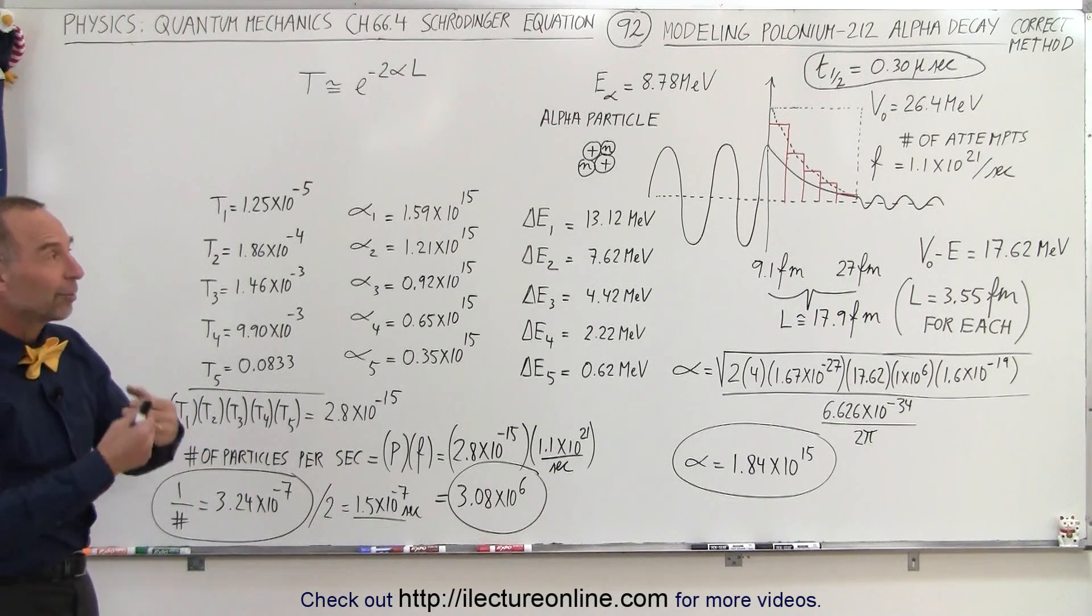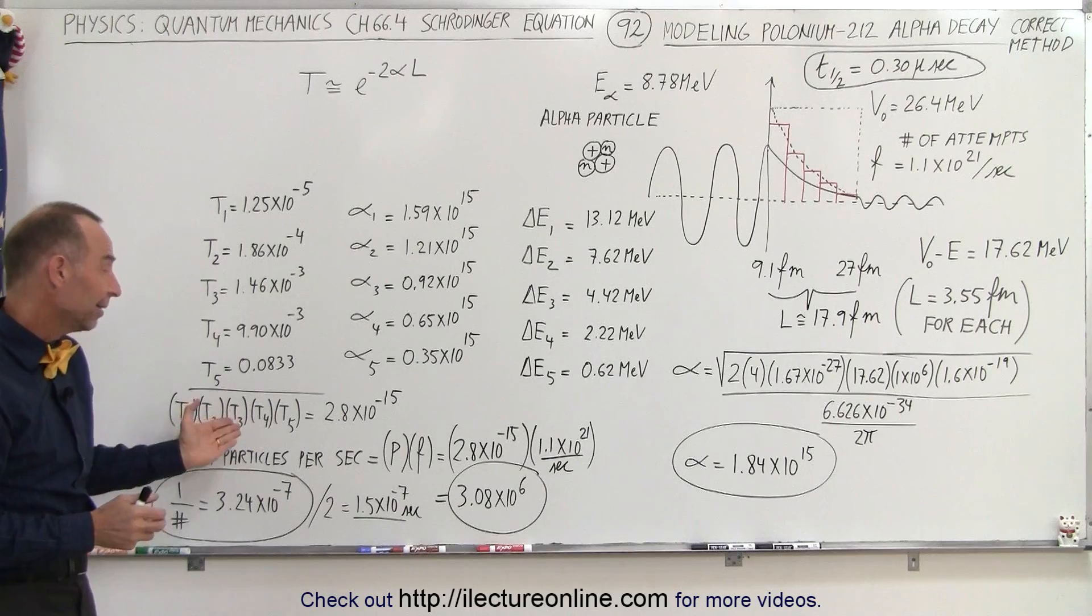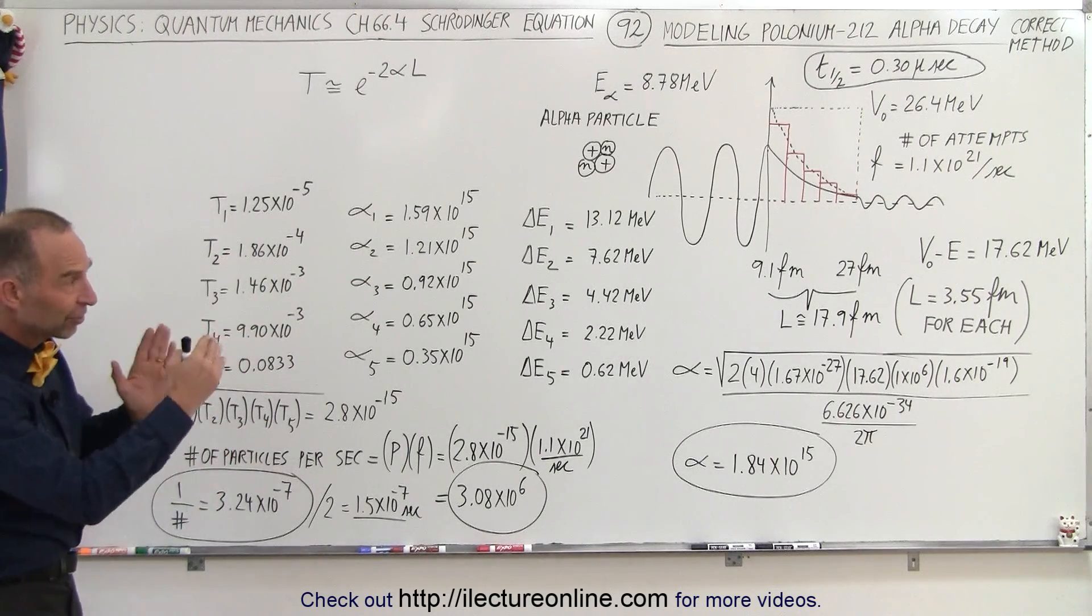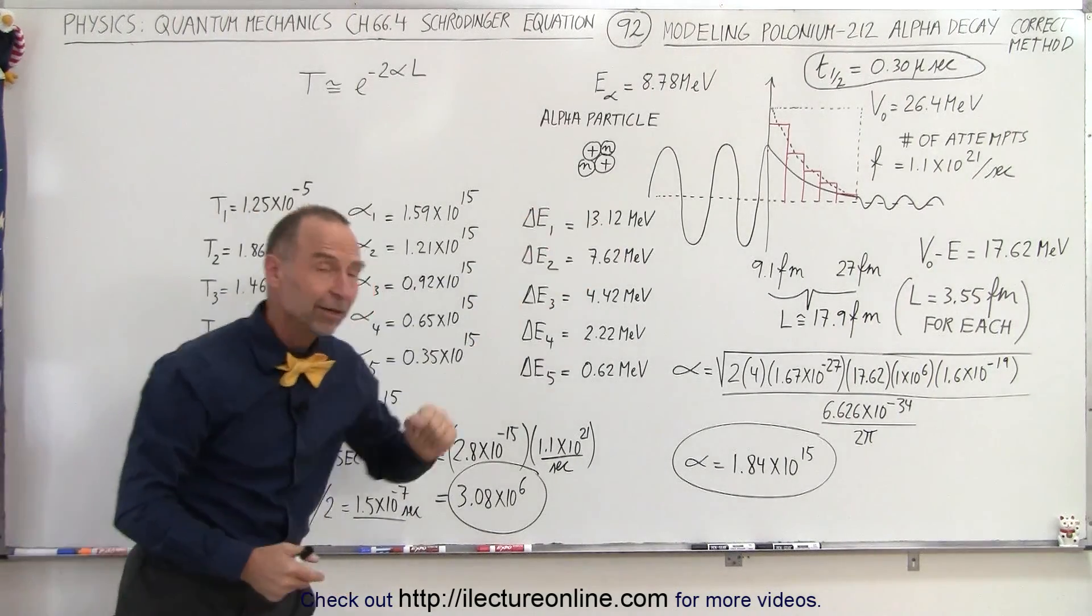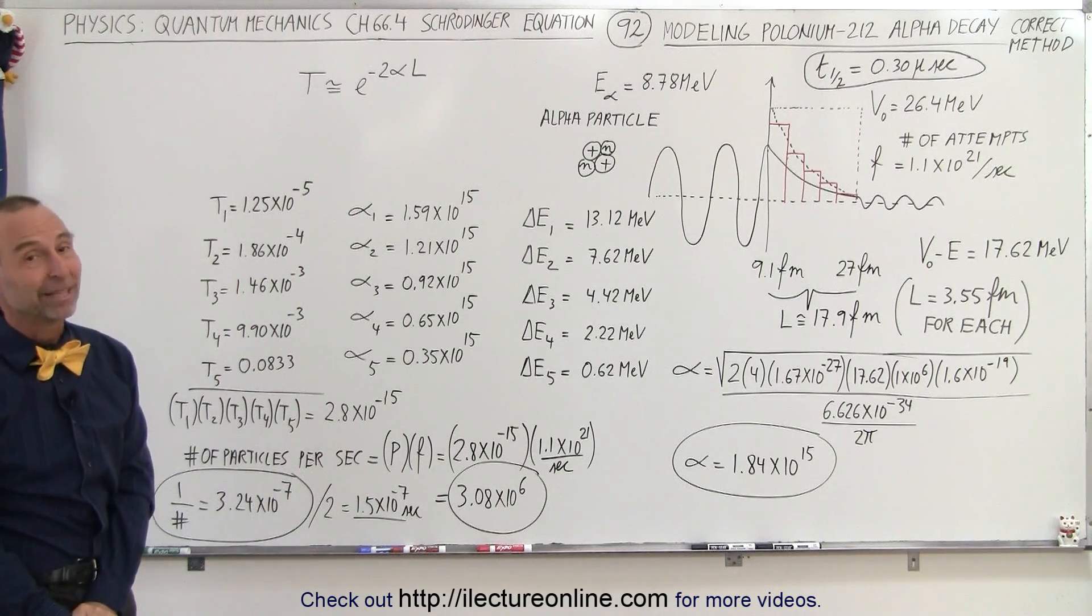I'm actually amazed to realize now how often particles try to break free from the nucleus if the nucleus is unstable, and given the physical dimensions and the physical barrier that's there, how successful they'll be. Well this is how we calculate that, that's how it's done.